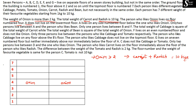The next clue: A does not live on the lowest floor, so A is not on floor 1. A lives on any odd-numbered floor below the one who likes onion. Onion is on floor 4, so below floor 4 the odd-numbered floors are 1 and 3. Since A cannot be on floor 1, A must be on floor 3.